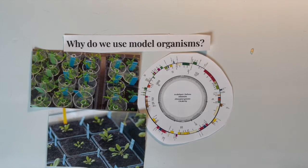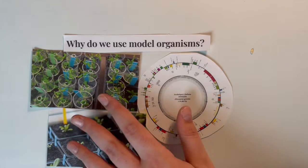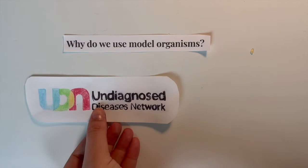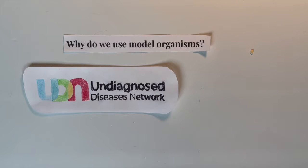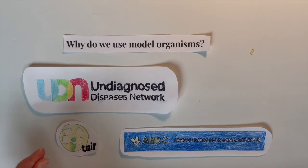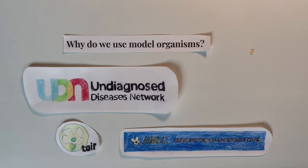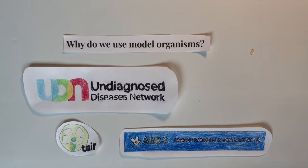Model organisms allow researchers to create unified communities with strong social ties that can then share their findings with one another. For instance, the model organism screening center for the undiagnosed disease network deals with Drosophila or fruit flies and zebrafish or Danio rerio. Additionally, working with Arabidopsis, another model organism, there is the Arabidopsis Information Resource and the Arabidopsis Biological Resource Center. Many of the genetic tools necessary are already available for these organisms. For example, in the Arabidopsis lab that I work in, we ordered Arabidopsis seed with our mutation of interest so we could study the phenotype using reverse genetics.